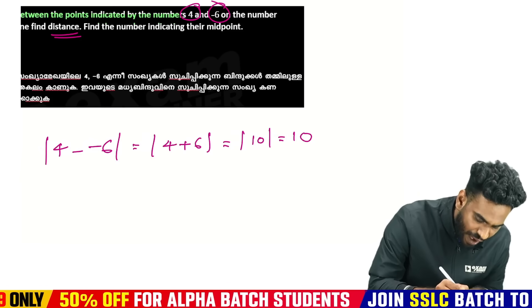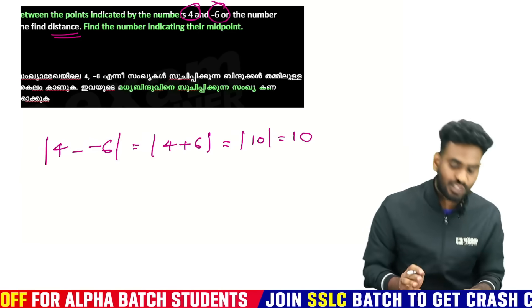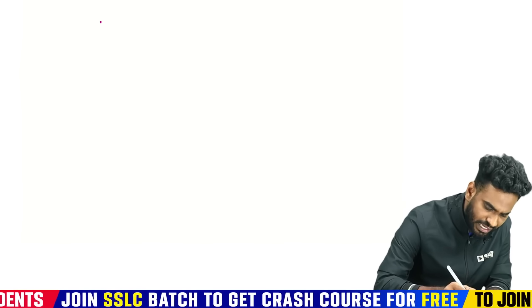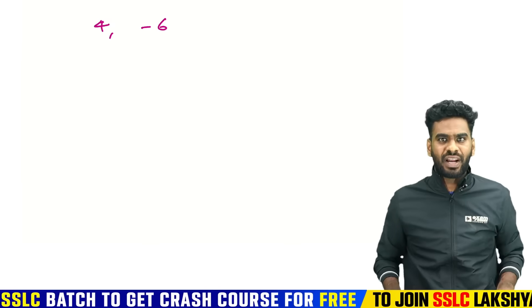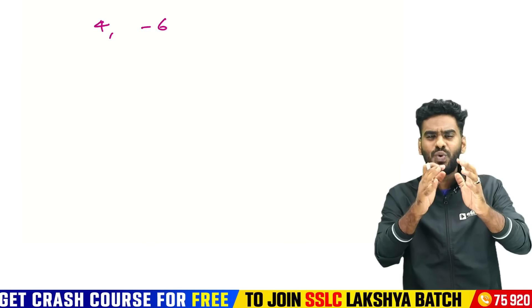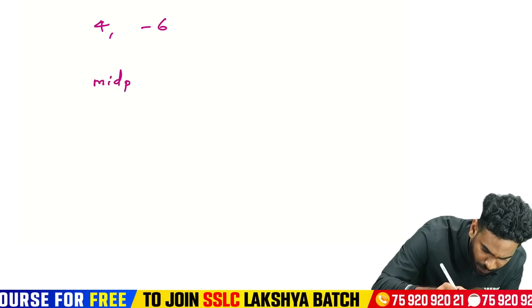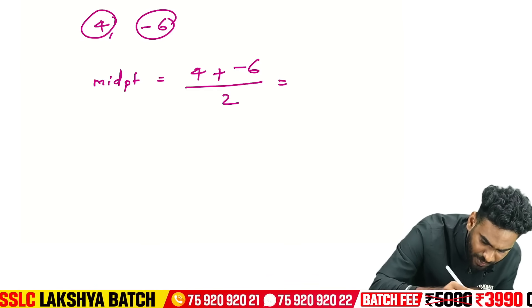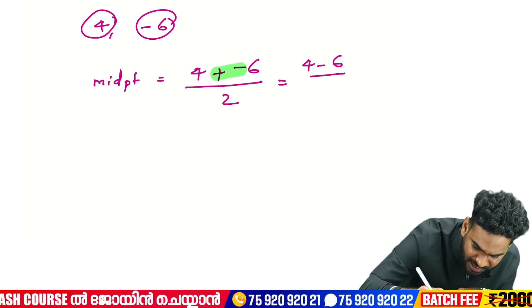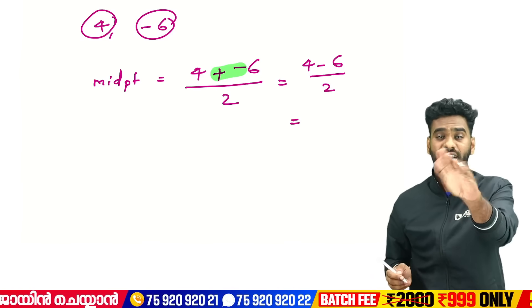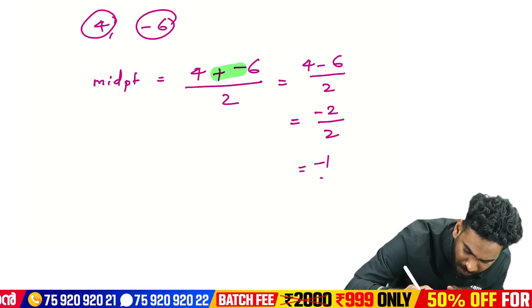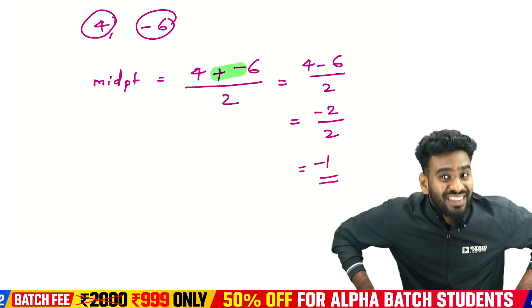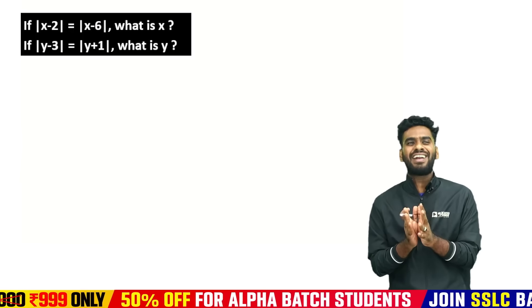Now finding the midpoint. The midpoint formula between two numbers X1 and X2 is X1 plus X2 divided by 2. Find the midpoint of 4 and minus 6. Midpoint equals 4 plus minus 6 divided by 2, which is 4 minus 6 over 2, equals minus 2 divided by 2, equals minus 1. So the midpoint is minus 1.